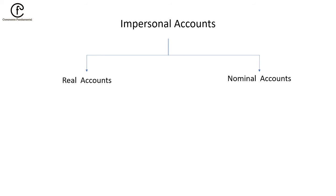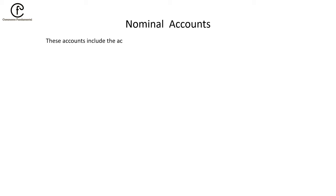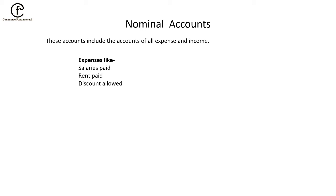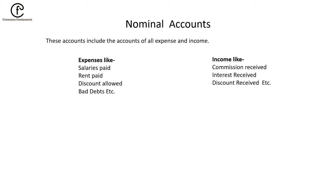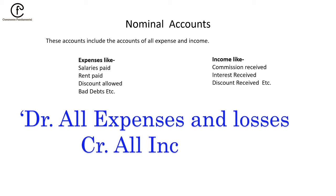Now, Nominal Accounts. These accounts include the accounts of all expenses and incomes. Expenses like salary paid, rent paid, discount allowed, bad debt, etc. Incomes like commission received, interest received, discount received, etc. The golden principle of nominal account is: Debit all expenses and losses, Credit all income and gains.